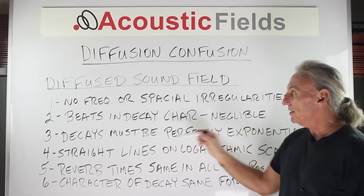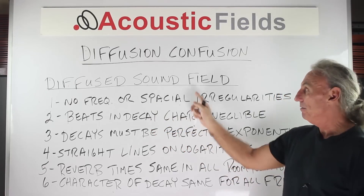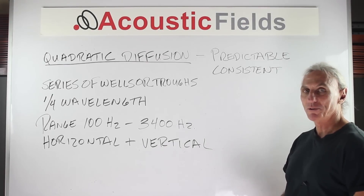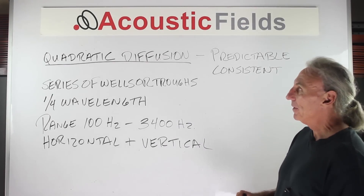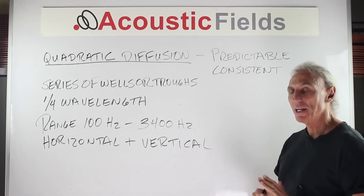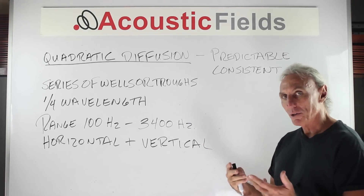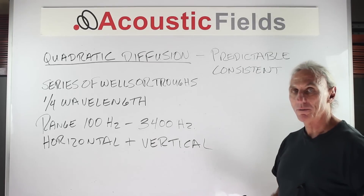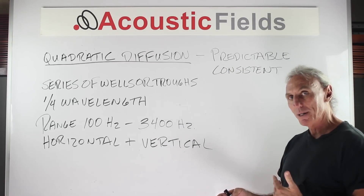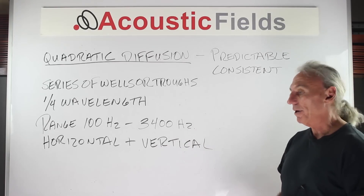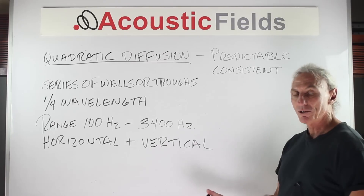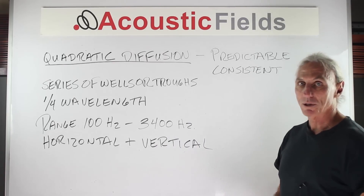So we have these six criteria that we must meet for a truly diffused sound field. Now how are we going to get that in our rooms? Quadratic diffusion — that's the easiest way, simplest way, and a way you can do yourself. You can build a quadratic diffuser yourself. It's predictable and consistent in its performance and frequency response, so it's a great tool to use. There are other kinds of diffusion, but for most purposes — professional or amateur — quadratic diffusion works the best.